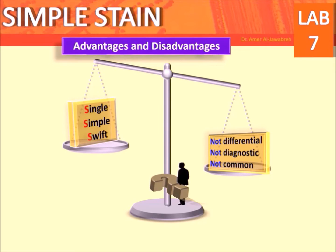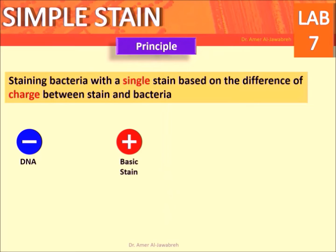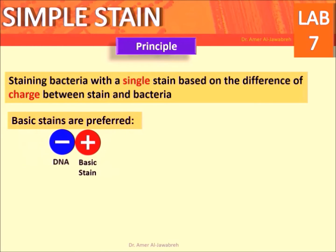Advantages: simple stains are single, simple, and swift. Disadvantages: they are not differential, not diagnostic, and not commonly sufficient alone. The principle is staining bacteria with a single stain based on the difference of charge between stain and bacteria. Basic stains are preferred.